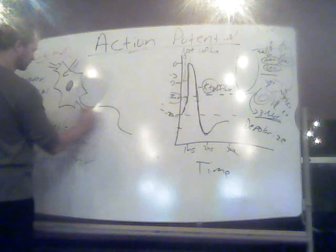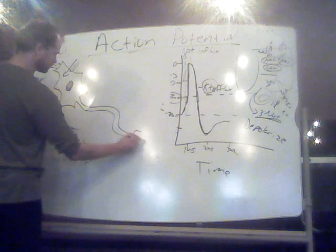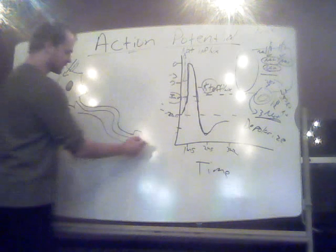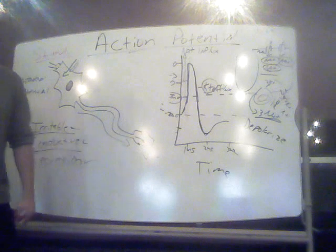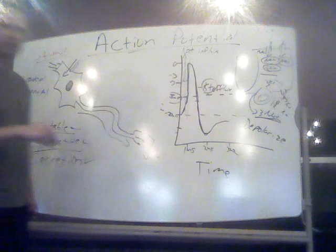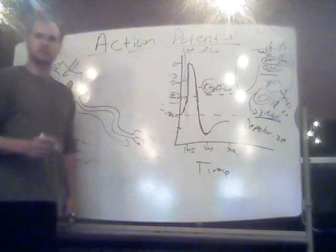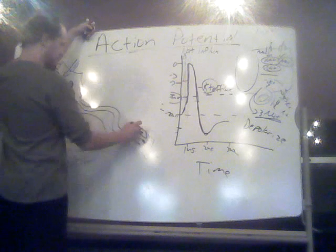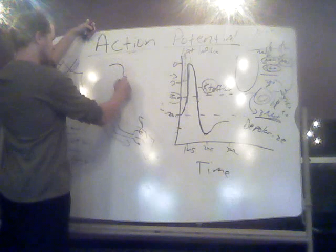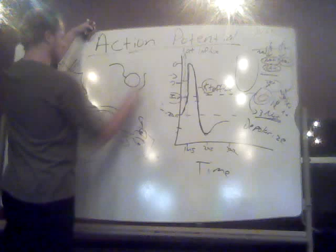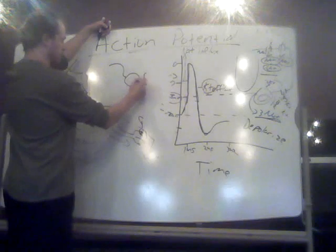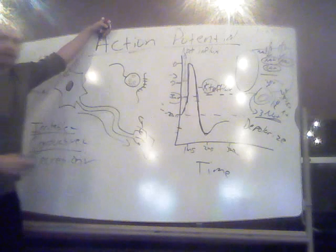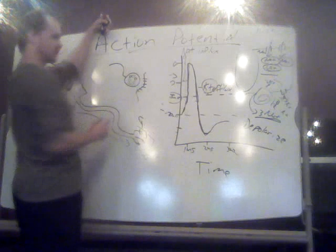So we've got this axon. We generated an electrical impulse down the length of the axon, and eventually it's going to hit these synaptic terminals. What's going to happen once we reach these synaptic terminals is that's going to stimulate the release of neurotransmitters. If we take a look at this up close, you're going to see this vesicle-like structure, and then some kind of target tissue on the other side where there are receptors for this chemical message. Inside of this synaptic terminal — often called the boutons — there are vesicles that store neurotransmitters.